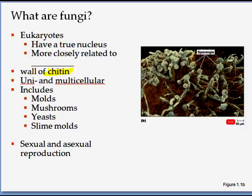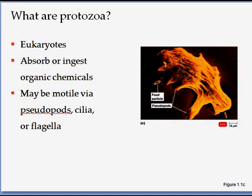What are protozoans? Protozoans are usually single-celled eukaryotes — they do have a nucleus. They are fairly simple organisms, but they are able to take in food by ingestion or absorption by chemicals. They move by various methods; one method shown here is pseudopods, which are like false arms that come out and engulf food particles. They are classified based on their motility, which we will study later.